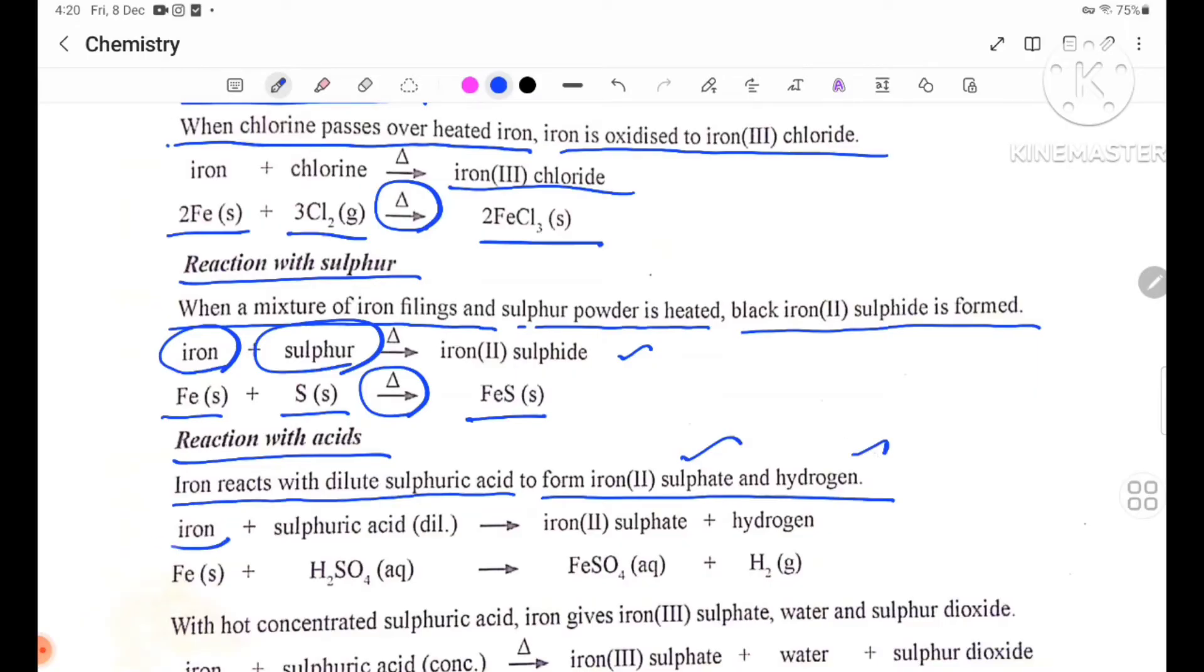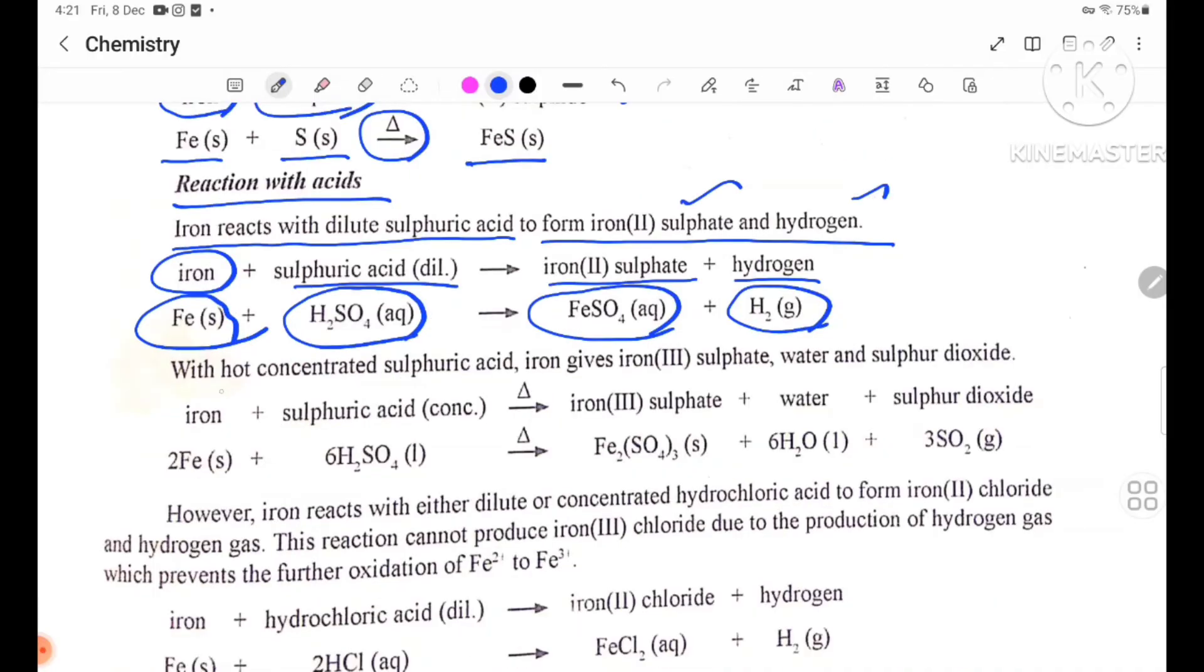Iron plus sulfuric acid dilute forms iron(II) sulfate plus hydrogen. Fe solid plus H2SO4 aqueous forms FeSO4 aqueous plus hydrogen gas. Iron with hot concentrated sulfuric acid forms iron(III) sulfate, water, and sulfur dioxide. Fe solid plus H2SO4 liquid forms Fe2(SO4)3 aqueous plus H2O liquid plus sulfur dioxide gas.